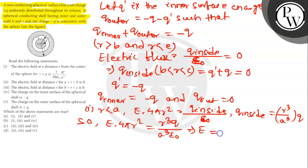E is equal to (1/4π) times QR by A³ epsilon_0.